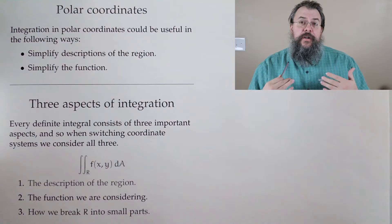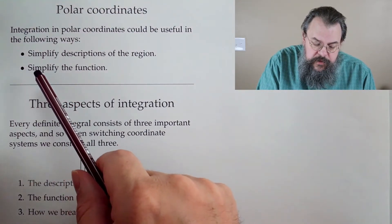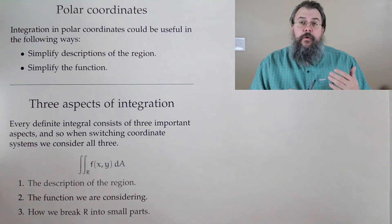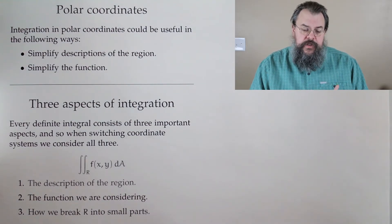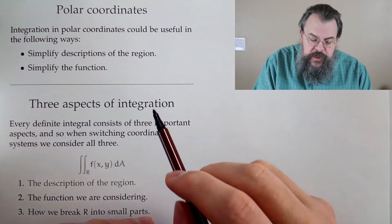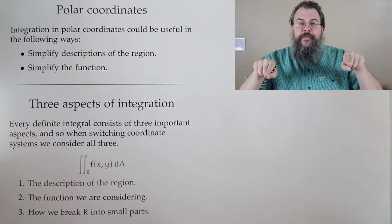Now, how could it make things easier? Well, it might have a more simple description of the region that we're trying to integrate over, or it might simplify the function. Now, what do we mean by it might have a simple description of the region? Well, if you think about Cartesian coordinates, they're great for rectangles,